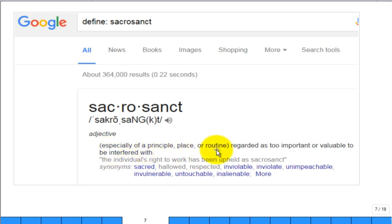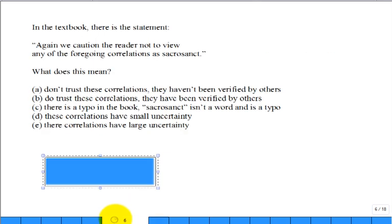So, here it is. Especially of a principal place or routine regarded as too important or valuable to be interfered with. So, it's sacred, it's hallowed, it's respected, it's invulnerable, inviolable, unimpeachable, untouchable, inalienable, unquestionable. So, with that definition of that word, I pose the same question to you. You have another chance at the same question before I grade it. Everybody in? Let's go ahead and stop it then.